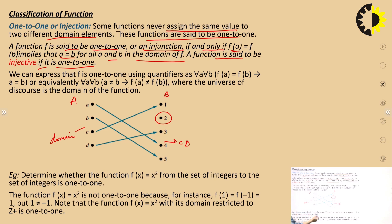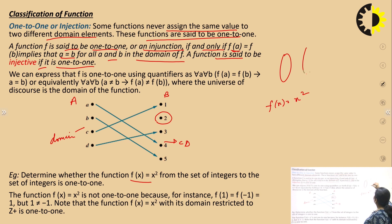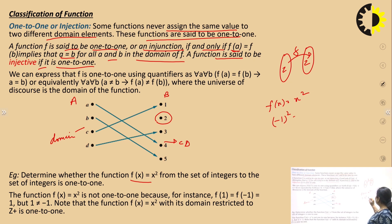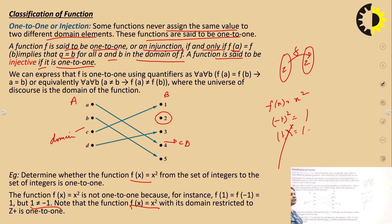Determine whether the function f(x) = x² from the set of integers to the set of integers is one-to-one or not. For x = -1, (-1)² = 1. For x = 1, we also get 1. So for two different domain elements, -1 and 1, we are getting the same co-domain element. Therefore this is not a one-to-one function, since 1 ≠ -1 but f(1) = f(-1).